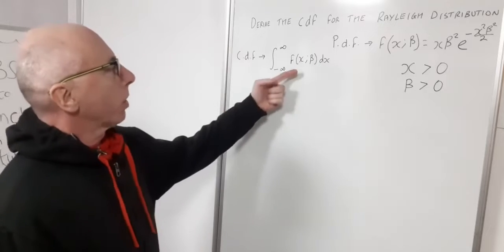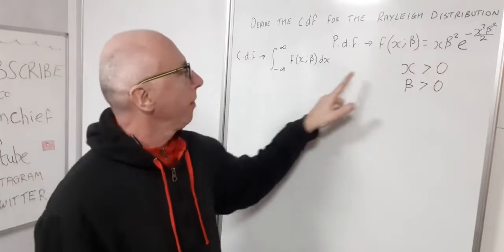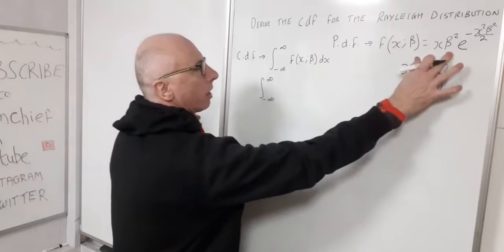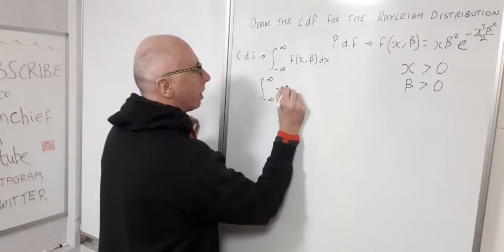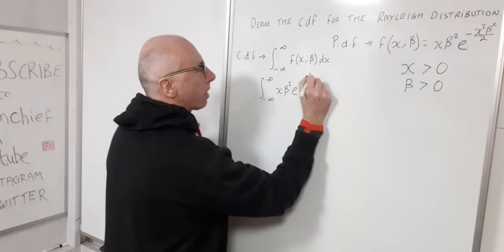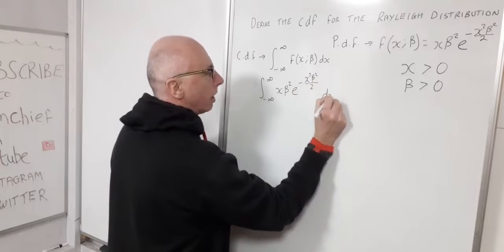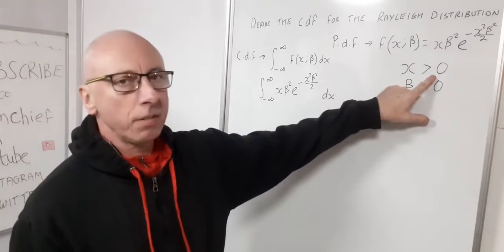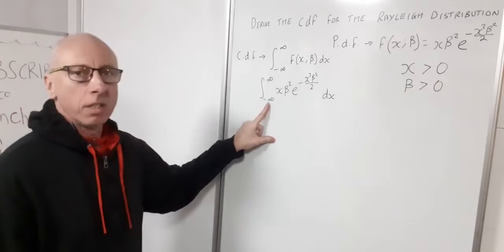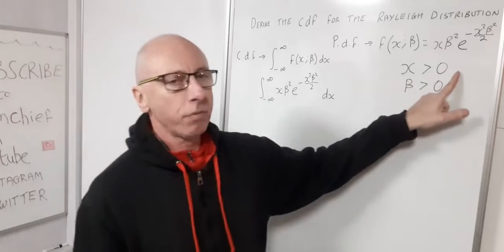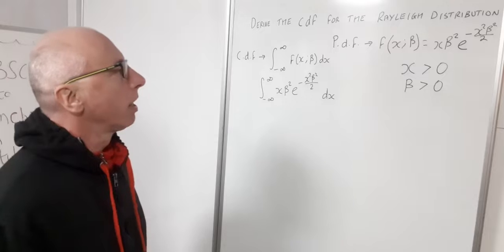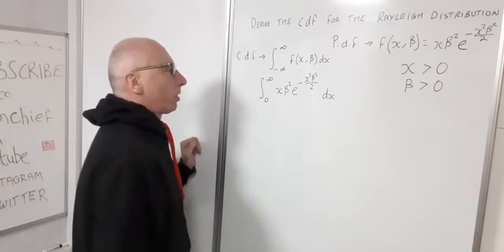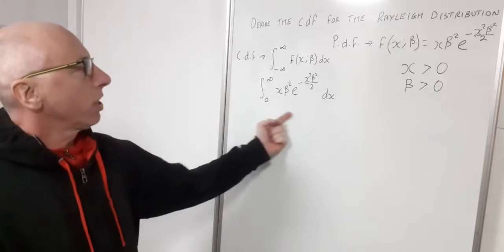Now I'm going to input my PDF inside of the integral, integrating from negative infinity to infinity. Since my random variable is always greater than zero with no negative values, if I integrate from negative infinity to zero I get zero — there's no information in that region. So I can change the lower limit from negative infinity to zero straight away.